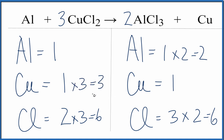So the coppers aren't balanced, the aluminums aren't balanced, but the chlorines are. And because we have a copper by itself here and an aluminum by itself here, those are really easy to fix. So for this aluminum, I need to have 2 to balance that out.